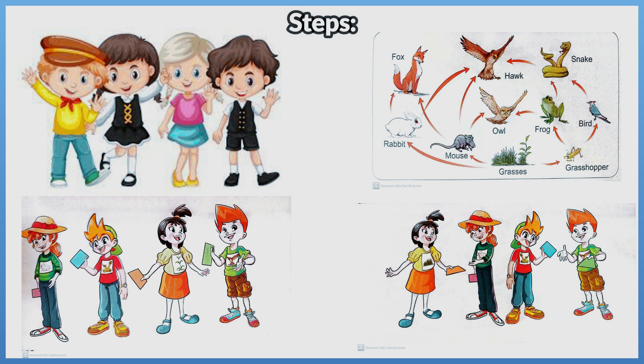Step 4 — Start the game with your friends. If one of your friends becomes a prey to another friend who is a predator, the prey gives his paper square to the predator.